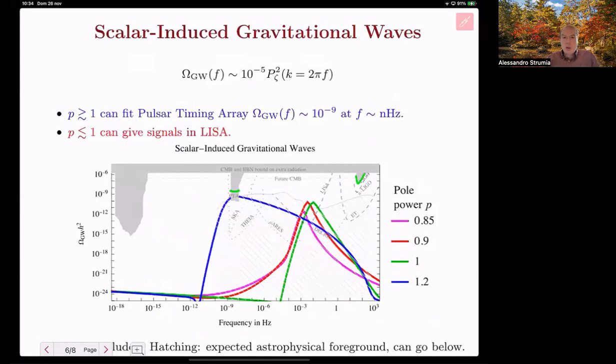At second order in the power spectrum, one obtains gravitational waves. Their energy is roughly approximated by this expression. So where the wave number becomes the frequency of the gravitational waves on this axis. So the case with power bigger than one can fit the pulsar timing array observation at nanohertz frequency, while the power smaller than one could give signals at higher frequencies.